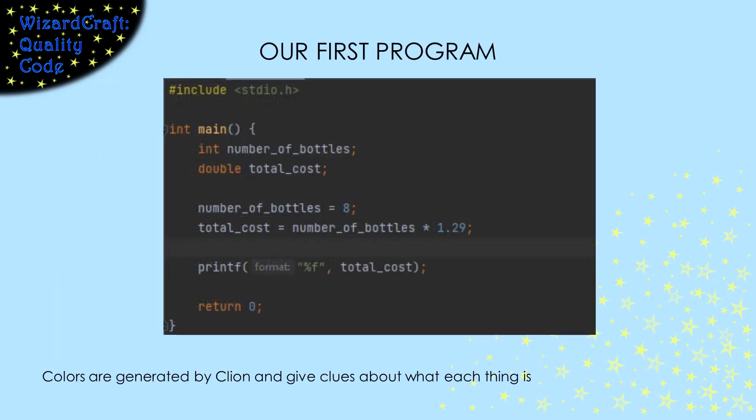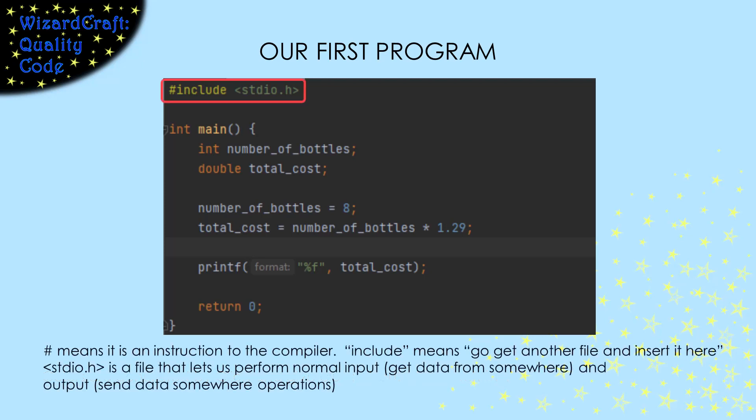Here is our first C program. The colors are generated by CLion and give us a clue about what the things are — orange is keywords, green is strings, and blue are constants. There are more colors for other language constructs we'll see soon. The first line of our code is an include statement. We read the octothorpe as pound, not hashtag. The pound sign tells us that this line is an instruction to the compiler. Pound include means go get another file and insert it here. stdio.h is a file that gives us the normal input and output operations. We're using printf to output information, but we'll talk about that more when we get there.